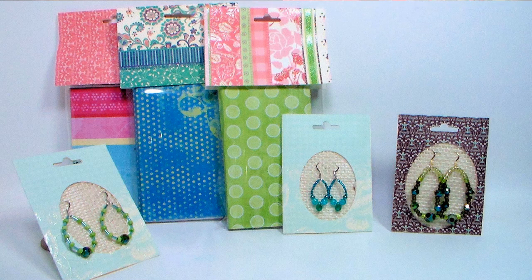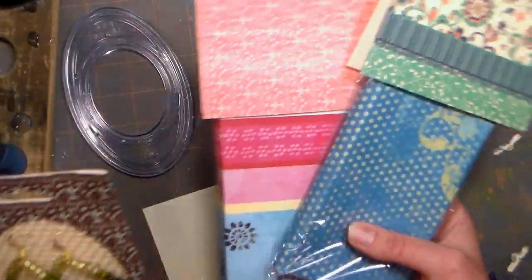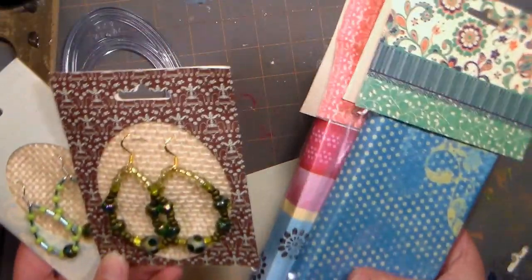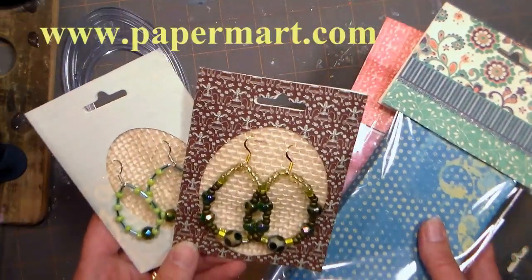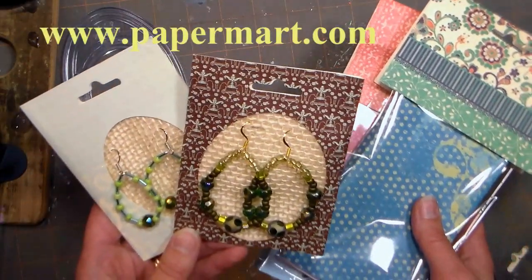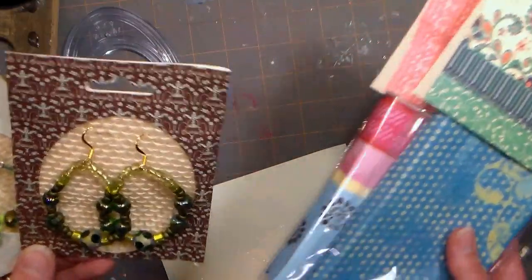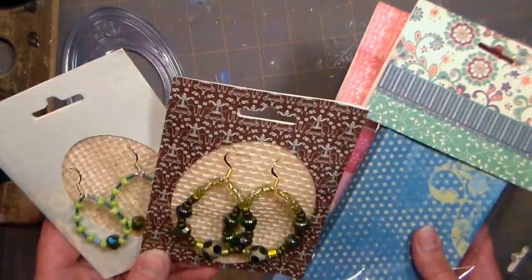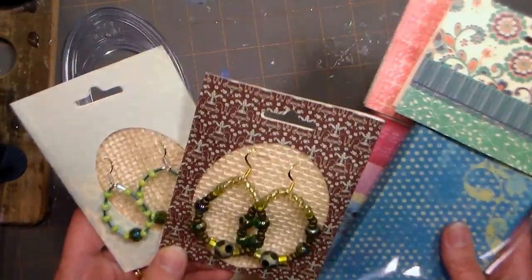Hi there, Lindsay here the Frugal Crafter. Today I'm going to share a couple ideas for packaging some special earrings and also some journals for your craft fair booths or wherever you like to sell your stuff. This video is brought to you by Paper Mart. You can find them online at www.papermart.com where they have all of your packaging needs. They have lots of great stuff, if they don't have it you don't need it and you're gonna get the best price and the highest quality there too. I love that shop.